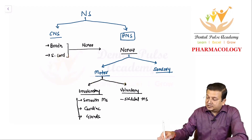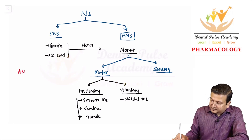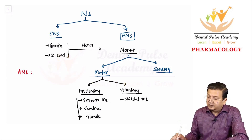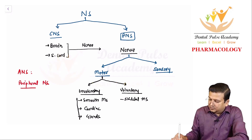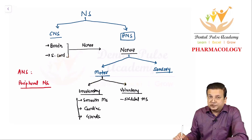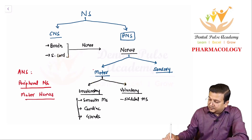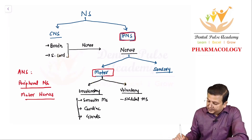So what is the autonomic nervous system? Number one, it is a part of the peripheral nervous system. Number two, it is composed of motor nerves — not sensory, but motor nerves — specifically those motor nerves which are going to involuntary structures.